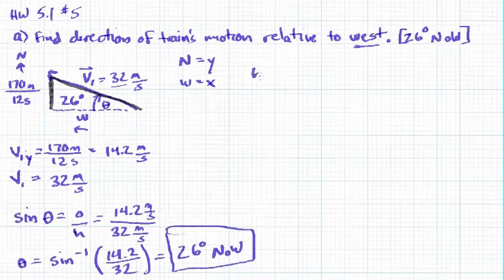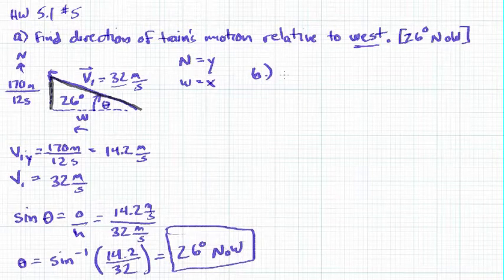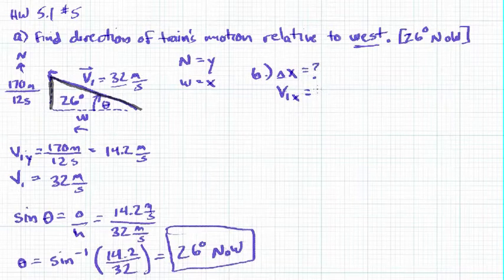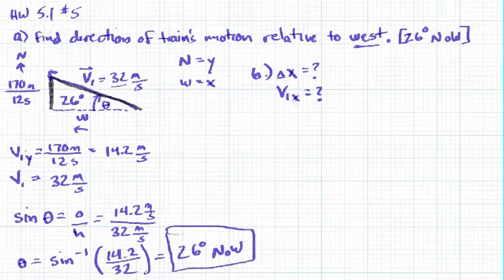I'm going to write B down below. What we want to find is how far west has the train traveled in this time. What is the x displacement if west is x? In order to know that, we would need to know the initial velocity in the x direction. We know the regular old initial velocity at an angle, we know the y component of velocity, but we don't know the x direction velocity — but we can find it using the Pythagorean theorem.